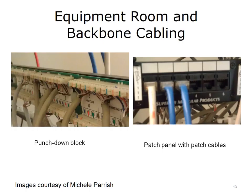Some common equipment found in an equipment room includes the punch-down block, patch panel, and switch or hub. A punch-down block is a panel where TP is brought and all eight wires are punched down into the block. In front of the punch-down block is a patch panel containing RJ45 ports. Patch cables are short sections of twisted-pair cabling with connectors on both ends that connect the patch panel port to a switch, hub, or router. Backbone cabling includes vertical connections between floors (risers), cables between equipment rooms and building cable entrance facilities, and cables between buildings. Cables between floors and equipment rooms are typically TP or fiber, with inter-building cables being fiber.